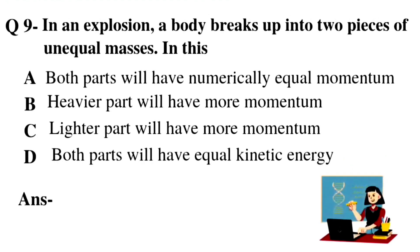Question number 9: in an explosion, a body breaks into two pieces of unequal masses. Option A: both parts will have numerically equal momentum. Option B: heavier part will have more momentum. Option C: lighter part will have more momentum. Option D: both parts will have equal kinetic energy.